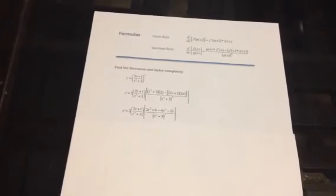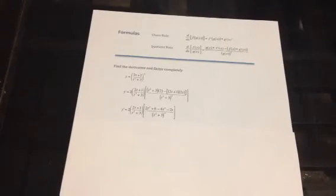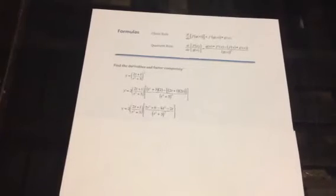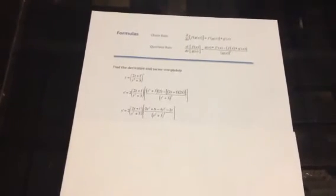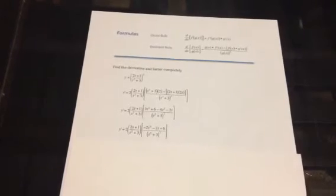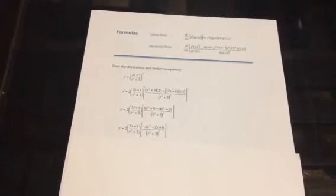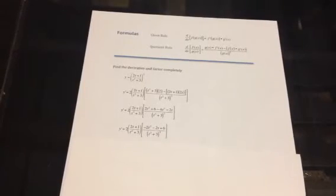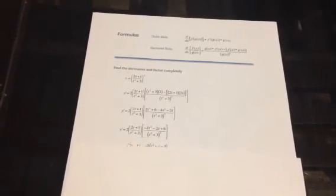We will then distribute, which will give us 2t squared plus 6 minus 4t squared minus 2t. We will then combine like terms to clean up our equation, giving us negative 2t squared minus 2t plus 6.